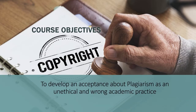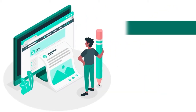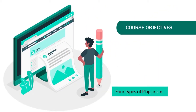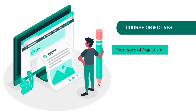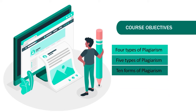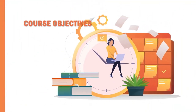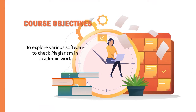This course aims to develop an acceptance of plagiarism as an unethical and wrong academic practice. It will talk about different forms of plagiarism, because there is no universal classification — you may find 4, 5, or even 10 types depending on the source. The course will identify common forms of plagiarism, how they differ from each other, and how to check plagiarism using open source, freely available, institutional, and paid software.